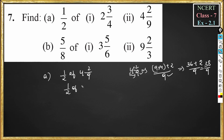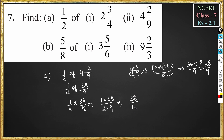So this becomes 1 by 2 of 38 by 9. Since 'of' means multiplication, 1 by 2 into 38 by 9 gives 1 into 38 divided by 2 into 9, which is 38 divided by 18. This is not in the lowest form because 18 and 38 have 2 as a common factor. So this simplifies to 19 by 9.